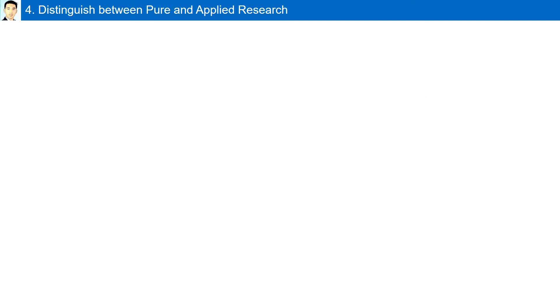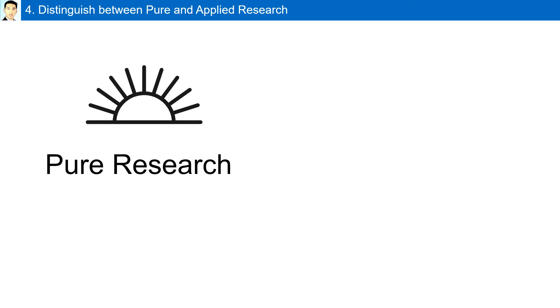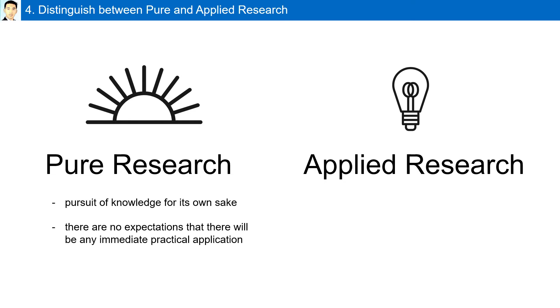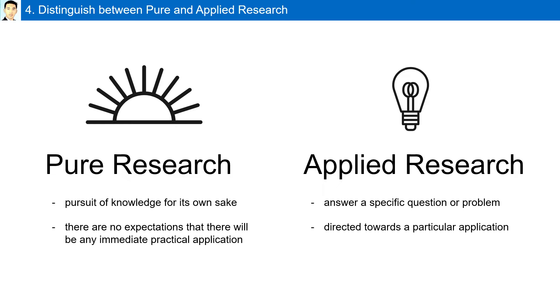Distinguishing between pure and applied research: scientists basically conduct two types of research — pure or basic research, and applied research. Pure research is the pursuit of knowledge for its own sake; there are no expectations that there will be any immediate practical application. While applied research is carried out to answer a specific question or solve a specific problem, and it is directed towards a particular application.